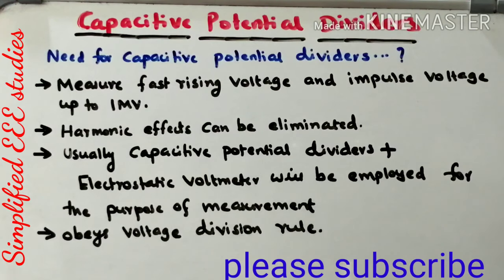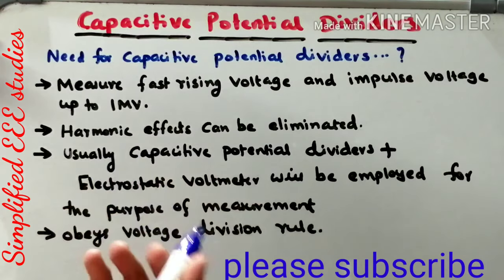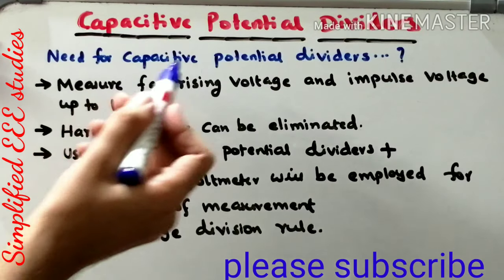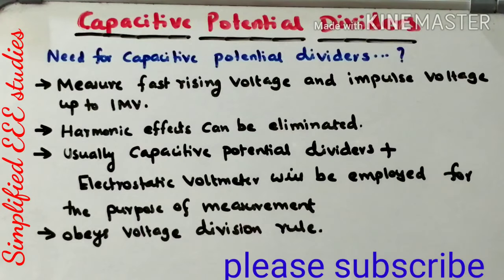Similarly, Capacity Potential Divider and Electrostatic Voltmeter will satisfy the requirement of measurement of high impulse voltage. Both Capacity Potential Divider and Electrostatic Voltmeter — that combination will be used for measurement of fast rising voltage and impulse voltage. It obeys the principle of voltage division rule, same as that of resistive potential divider. Now, let us show the circuit diagram of Capacity Potential Divider and how it operates.